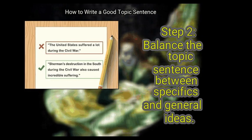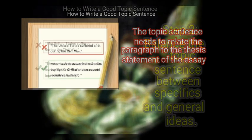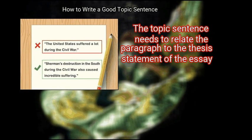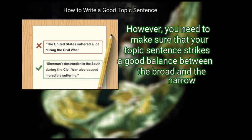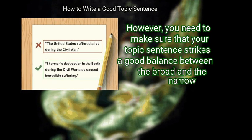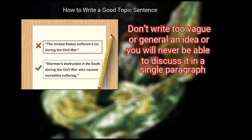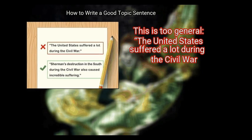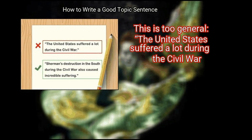Step 2: Balance the topic sentence between specifics and general ideas. The topic sentence needs to relate the paragraph to the thesis statement of the essay. However, you need to make sure that your topic sentence strikes a good balance between the broad and the narrow. Don't write too vague or general an idea, or you will never be able to discuss it in a single paragraph. For example, 'the United States suffered a lot during the civil war' is too general.